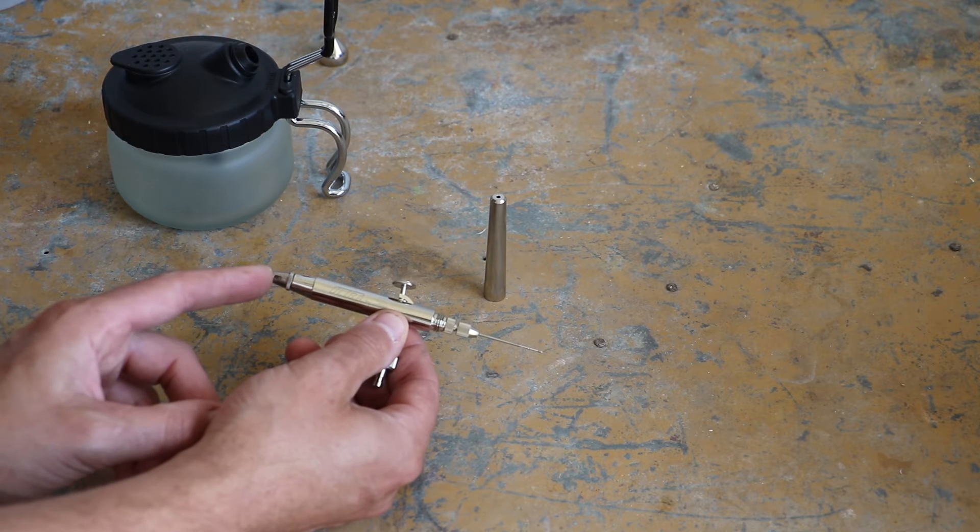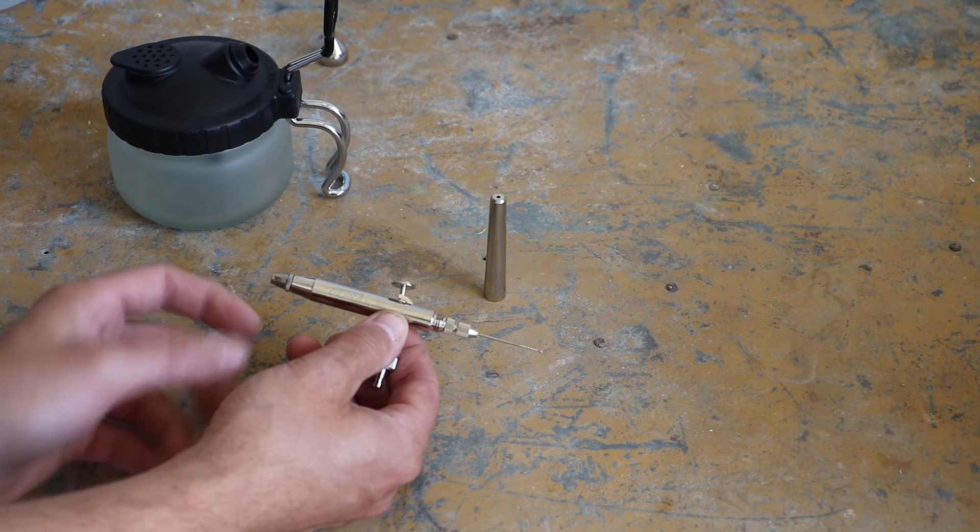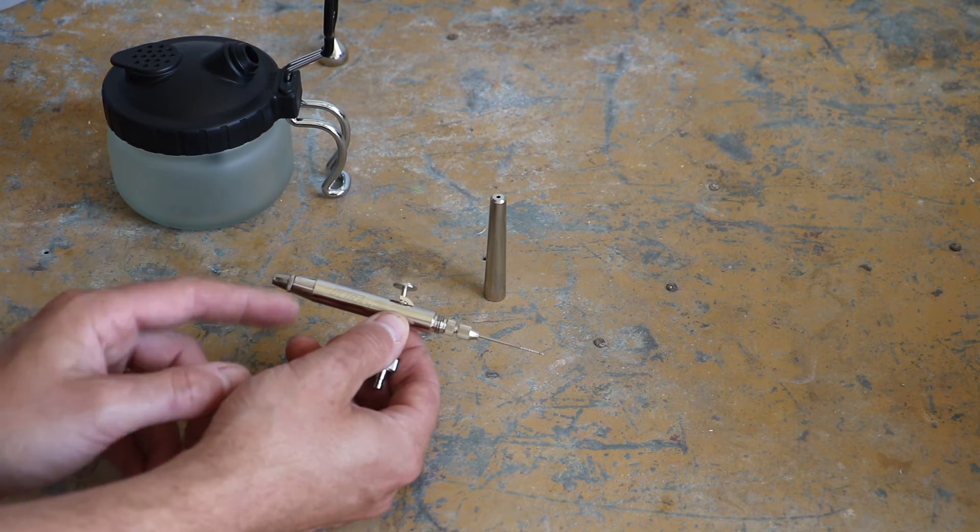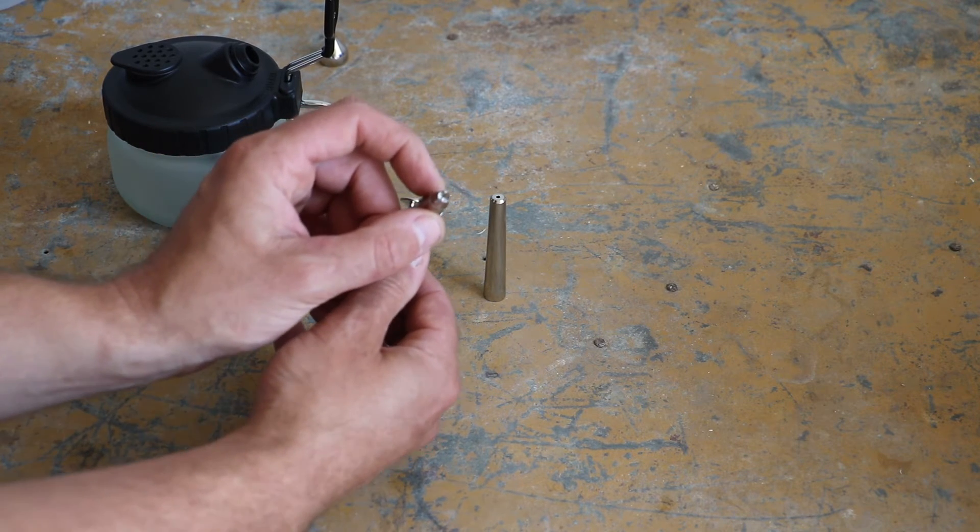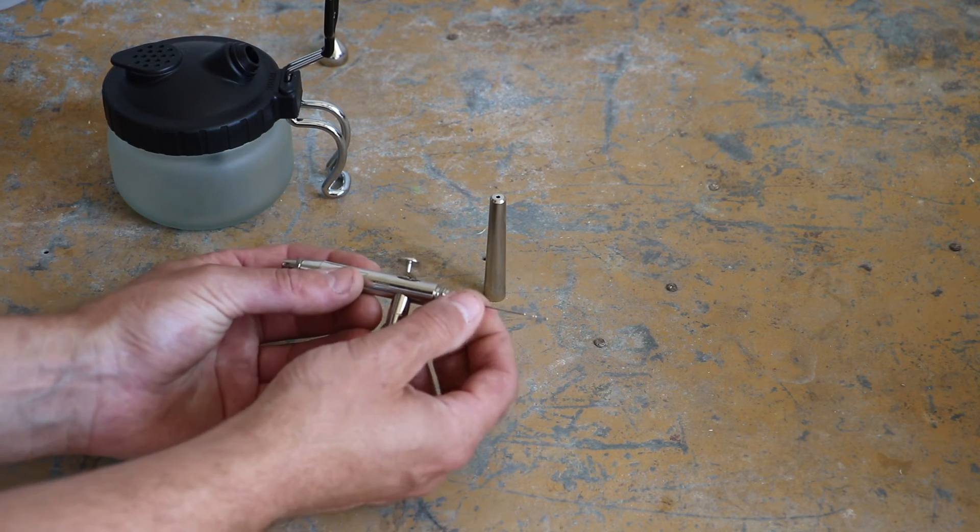So these could be removed but I won't touch that just yet we're going to carry on with this. And at this end this is the business end you've got the air head and then inside that you've got your nozzle which you can see end on.